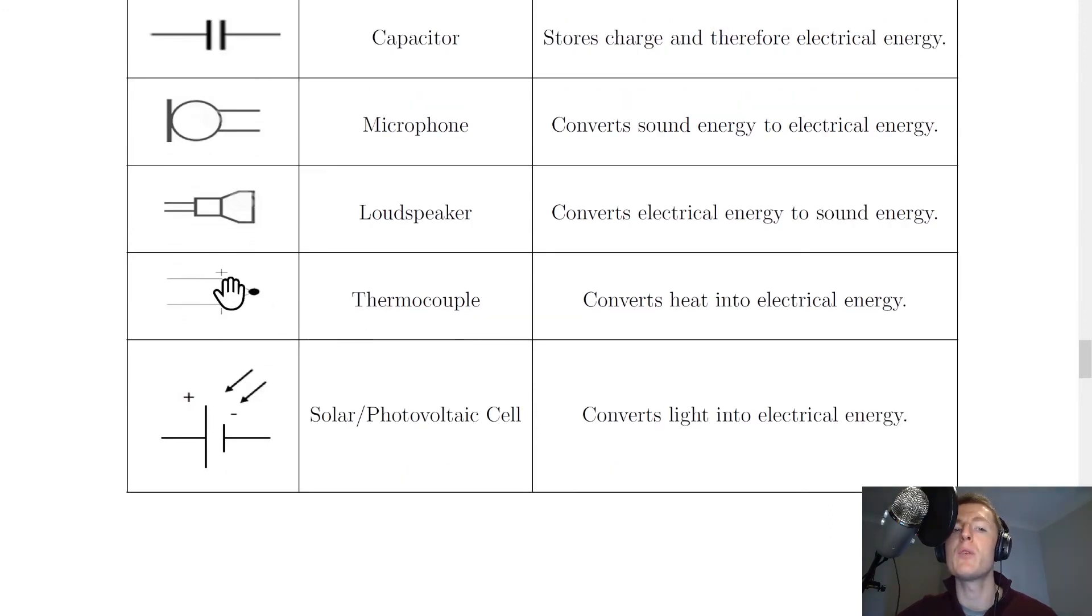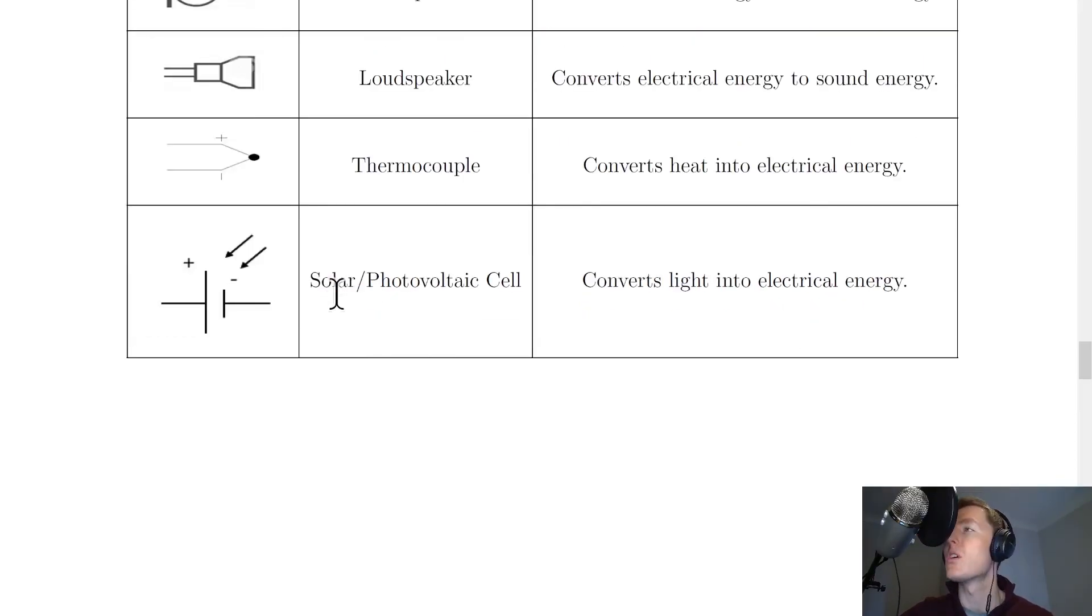A thermocouple has this symbol here, which looks a bit like a pencil with some lead on the end. And we've got a positive and negative part there. And this converts heat into electrical energy. Lastly, we have something called a solar or photovoltaic cell. And you would find lots of these in things like solar panels. And you'll notice the circuit symbol for this is a cell, so a positive negative terminal, with two arrows pointing in towards the cell. And these arrows represent light coming into the cell. So this converts light into electrical energy.